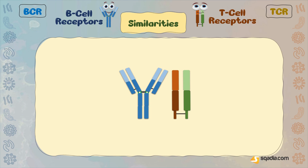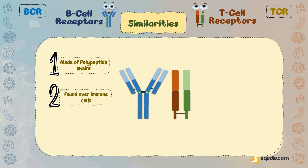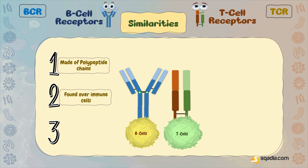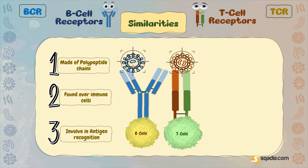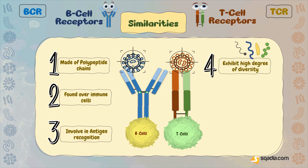Comparing them, we find many similarities between TCRs and BCRs. They have a structural resemblance, as both are made of polypeptide chains and both are found over the surface of immune cells — B-cells and T-cells, respectively. Both these transmembrane receptors play a similar primary function: antigen recognition. Both exhibit a high degree of diversity, allowing them to recognize a wide range of antigens. Upon antigen binding, both TCRs and BCRs initiate signal transduction pathways that activate downstream intracellular signaling cascades.